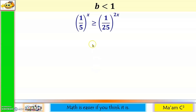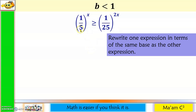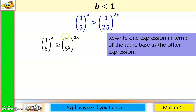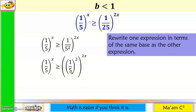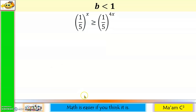Another example. Since the exponential expressions are already isolated on both sides, I'll proceed to step 2 and make our bases the same. This is easy — I'll just express 25 as 5 squared, and make this 1 over 5 raised to the second power. 1 squared is still 1, so nothing changed. To simplify, I'll multiply: 2 times 2x is 4x.